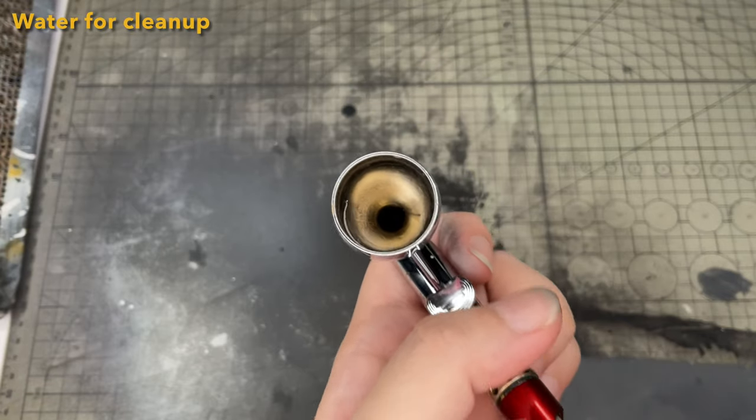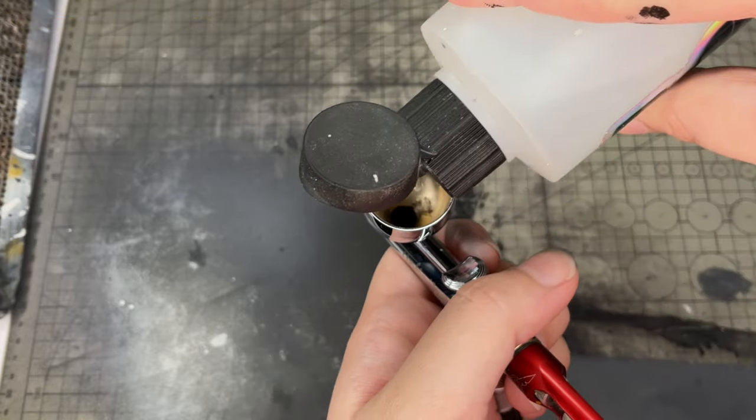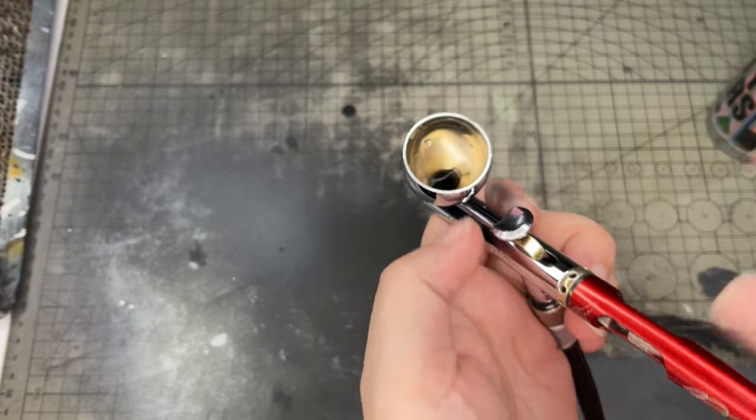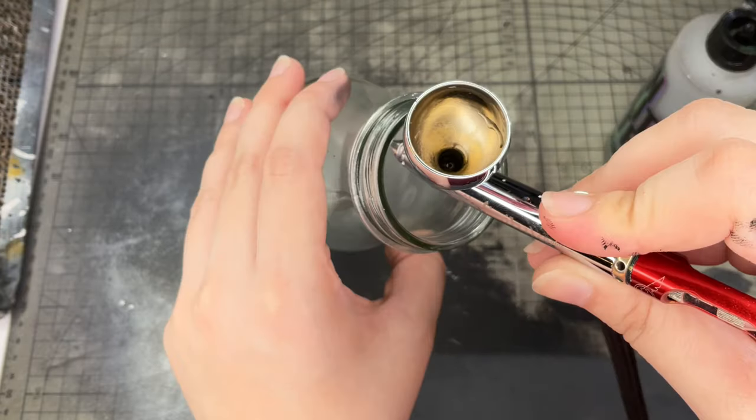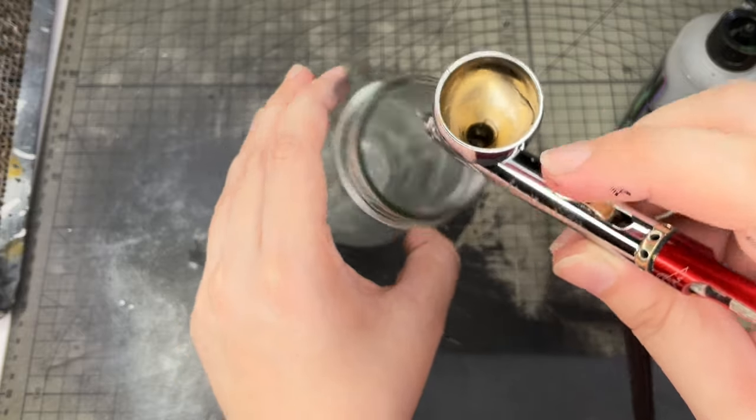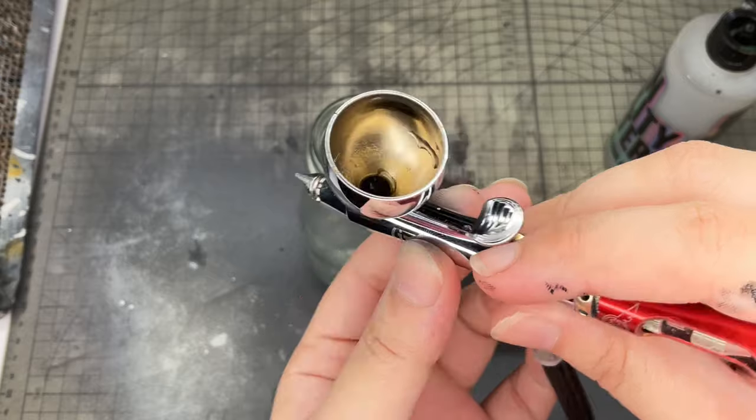Now, let's clean up the airbrush. I'm just going to use water again and let's see if it gets the job done. It's kind of hard to see but there's some black paint on the cup here. Just pour some water, backflow it, then just spray it out. It works well, especially because the leftover paint is not yet dried.